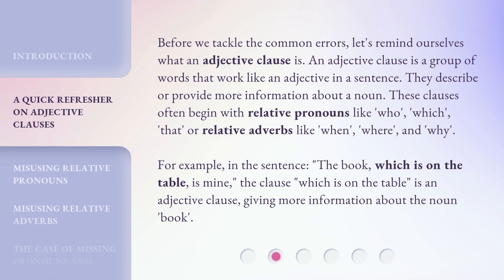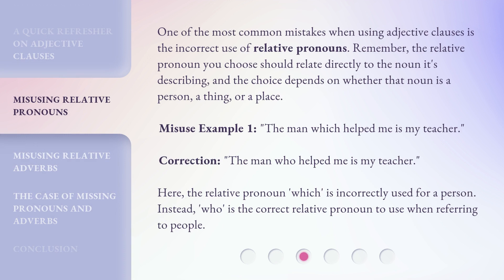For example, in the sentence — one of the most common mistakes when using adjective clauses is the incorrect use of relative pronouns. Remember, the relative pronoun you choose should relate directly to the noun it's describing, and the choice depends on whether that noun is a person, a thing, or a place.